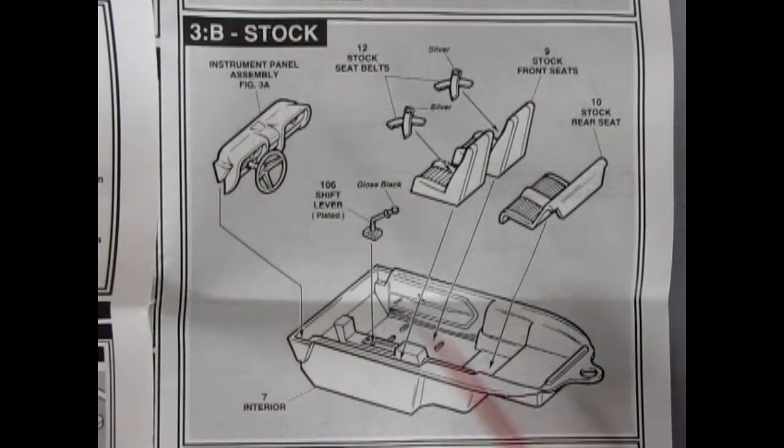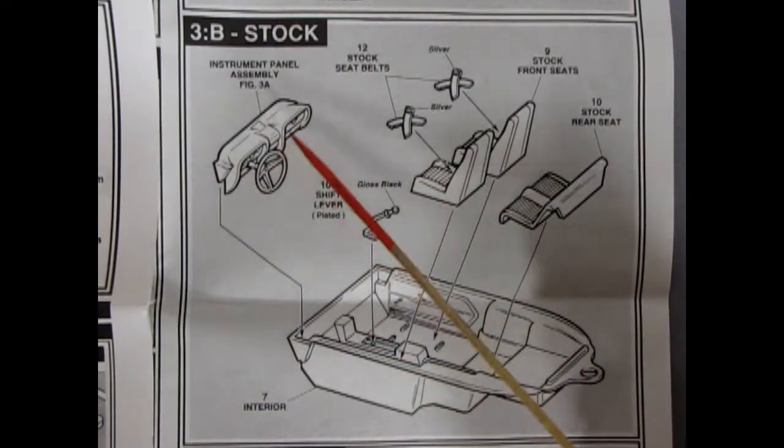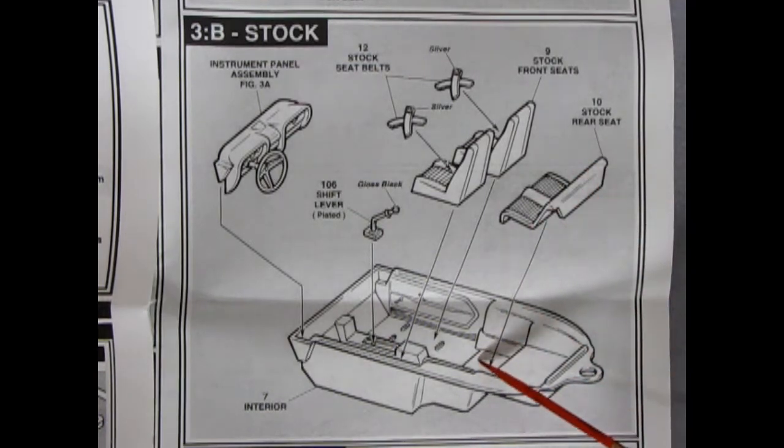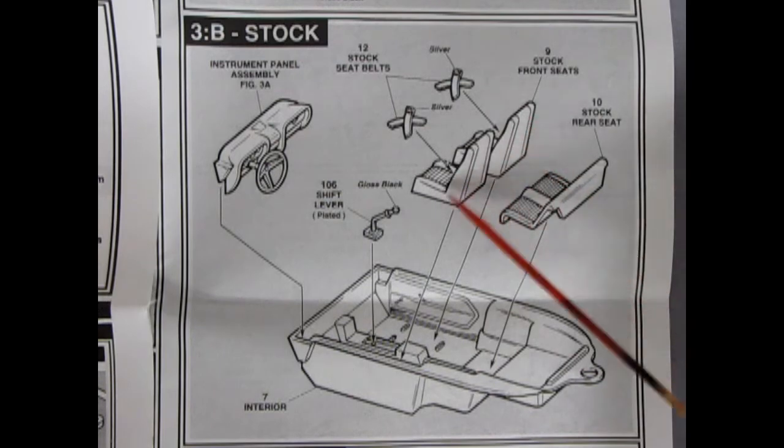3B or not 3B, that is the question. There's our instrument panel, which we'll glue into the bucket. So again, a 60s-era kit. Shift lever popping in. There's this nice little retainer clip right there. Stock rear seat we'll glue in. And then our stock front seats. And these are a one-piece bucket. And you have the option of seat belts in the front as well.